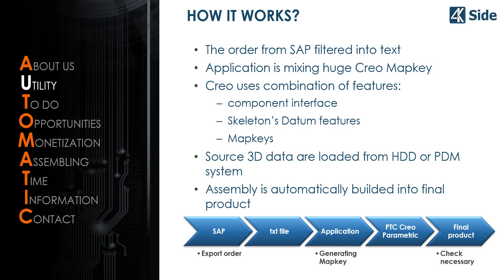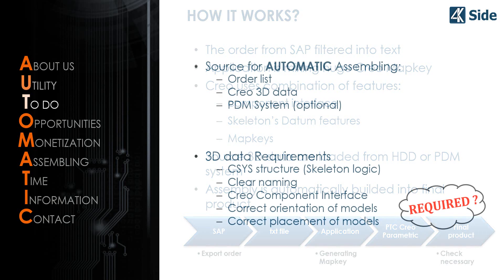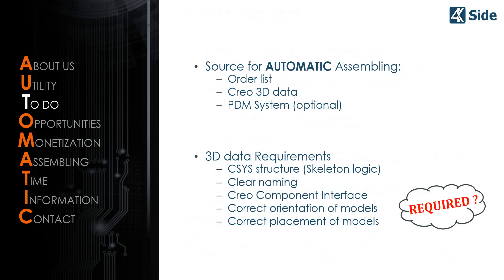From SAP you can export a text file, and then you can prepare your custom application. This application will work and generate a huge mapkey, then simply load this config profile — including one huge mapkey — into PTC Creo Parametric, then run the mapkey and the system will create the final product for you.